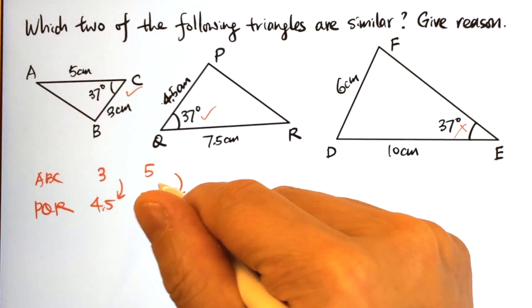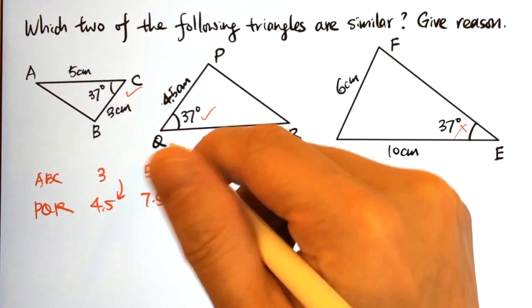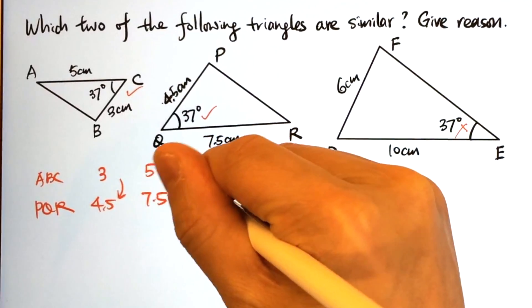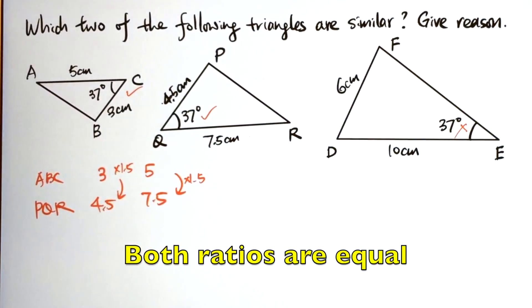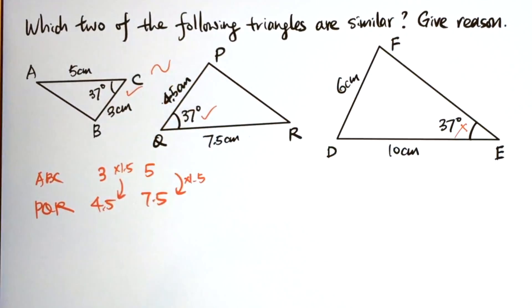Now see if the ratio of these two pairs of sides are equal. We can see that the scale factor is 1.5. Both ratios are equal to 1.5. Therefore, they are similar.